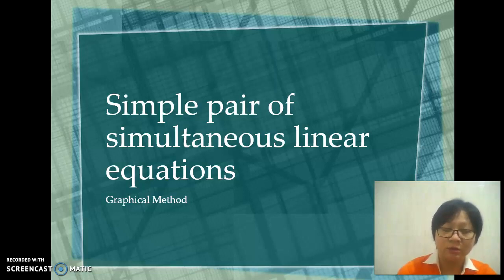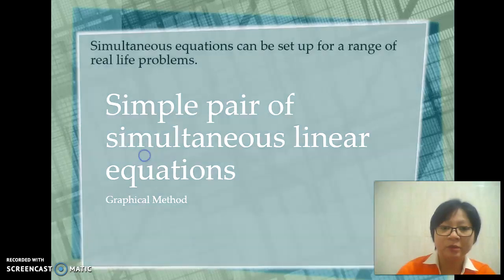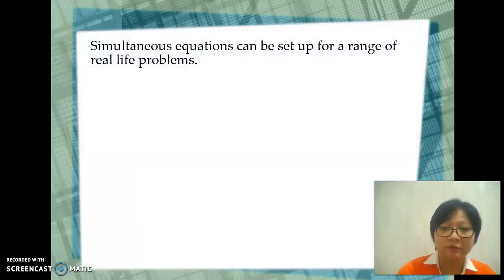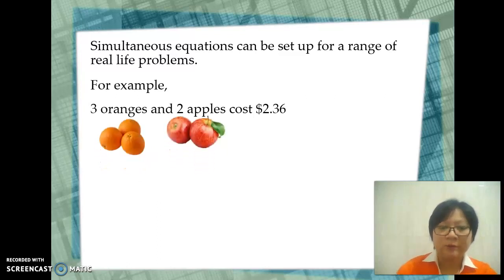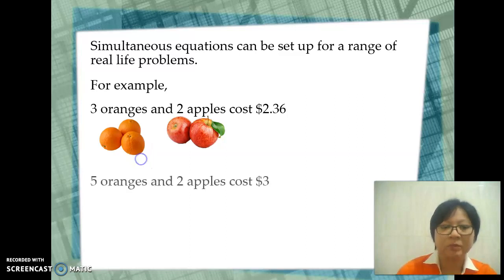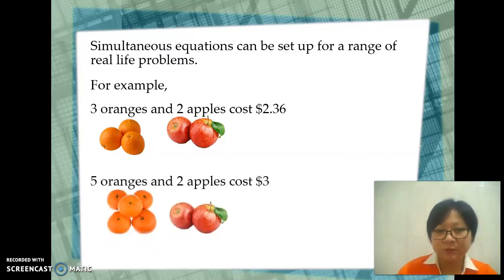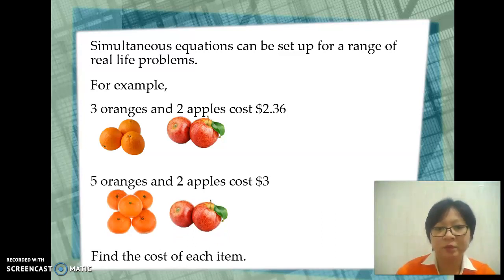Let's see an example taken from a real-life problem. Three oranges and two apples cost $2.36. Five oranges and two apples cost $3. Find the cost of each item. First, you need to formulate the linear equations based on the information given.